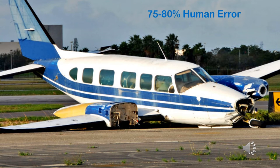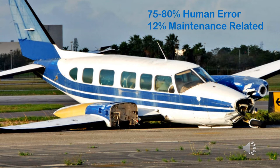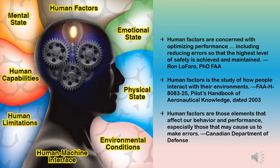Approximately 75-80% of all aviation accidents are the result of human error. Of those accidents, about 12% are maintenance-related. In this lesson, we will achieve a better understanding of those human factors that can lead to errors in aviation maintenance and how to reduce or eliminate these errors.